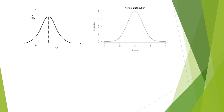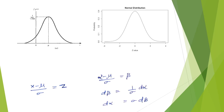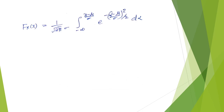The transformation is z = (x - mu) / sigma. Similarly, for the integration variable alpha, we define beta = (alpha - mu) / sigma. Taking the derivative, d(beta) = (1/sigma) * d(alpha), so d(alpha) = sigma * d(beta). These substitutions are then applied to the CDF expression.